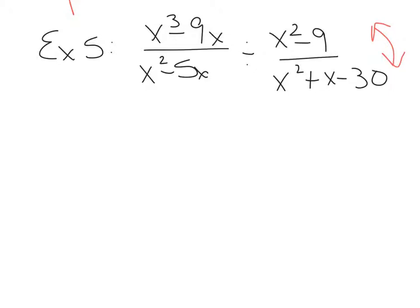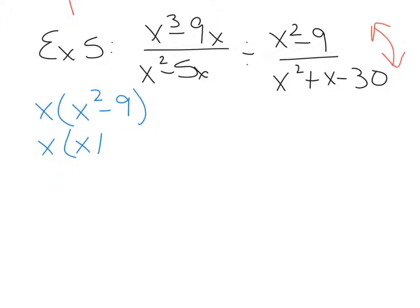With multiplication, it's all about factoring. Starting up here, x cubed minus 9x has a GCF of x, so we factor that x out. We're left with x squared minus 9, which is the difference of squares, so it factors again to be x plus 3, x minus 3. If you need help with factoring, I'll link those videos below.